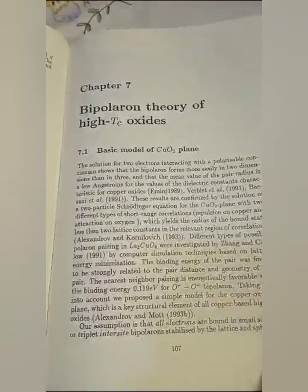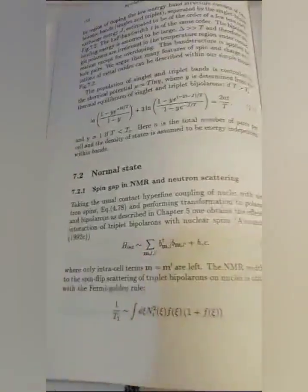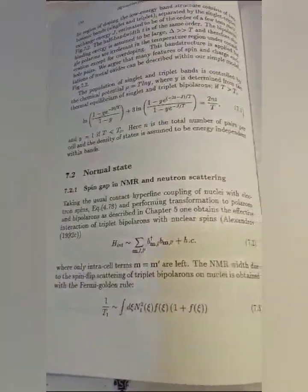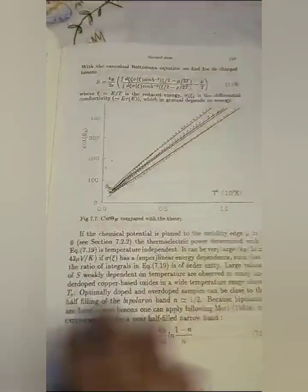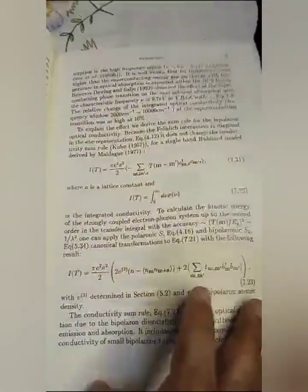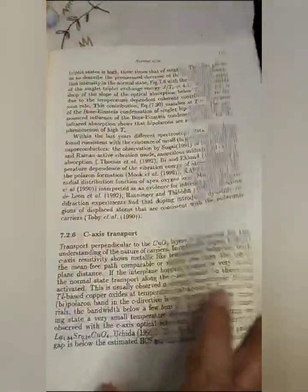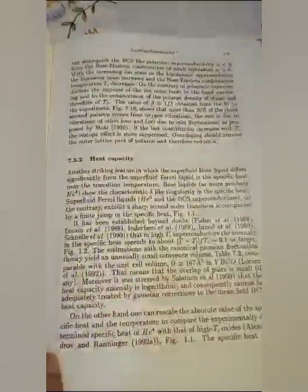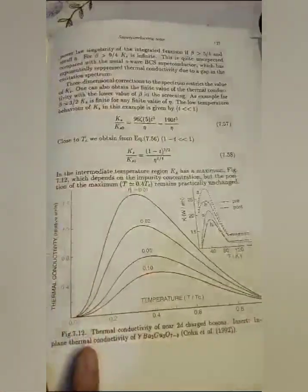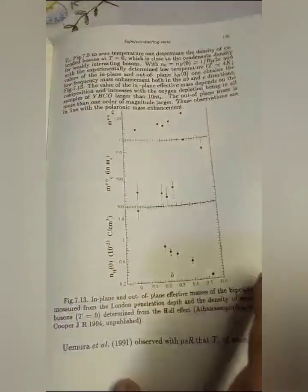Bipolaron theory of high temperature critical temperature oxides. Non-Fermi liquid alternatives. Bipolaron theory of high temperature resonance and neutron scattering, thermoelectric power, infrared conductivity, c-axis transport, superconducting states, isotope effects, heat capacity, London penetration depth.